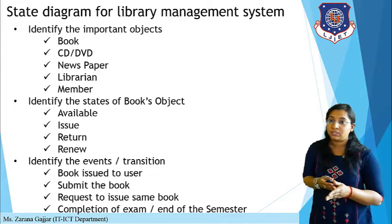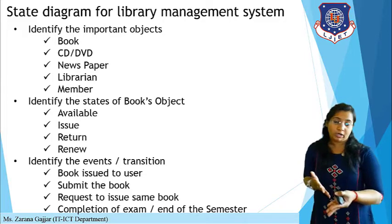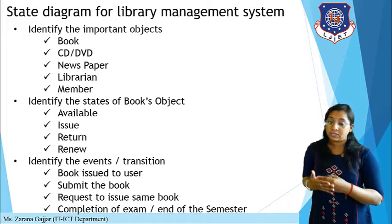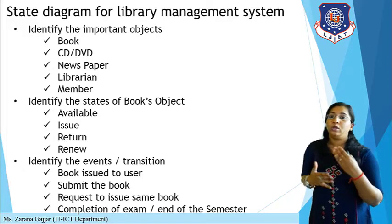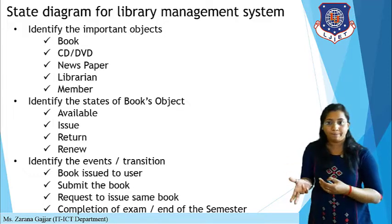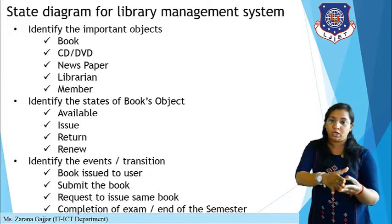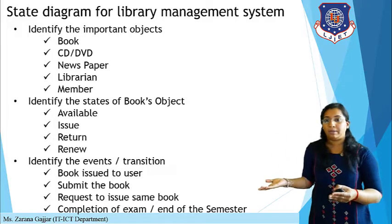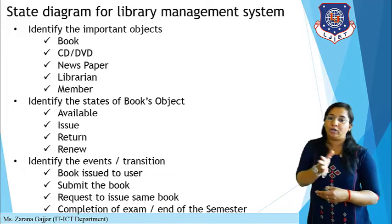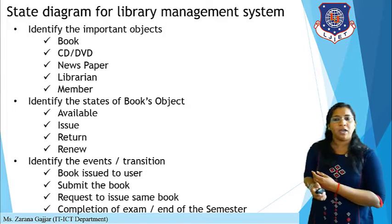Let's move to the library management system. Here, the important objects are book, CD, DVD, newspaper, librarian, and member. Then, identifying the states for book issuing: either the book is available, issued, written, or renewed — these are states of a particular book. Then you identify the events or transitions: book issued to a particular user, book submitted by a member, request to issue the same book for renewal, completion of exam or end of semester when you return the book.